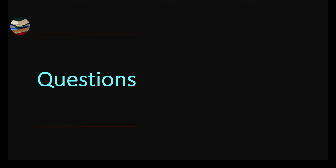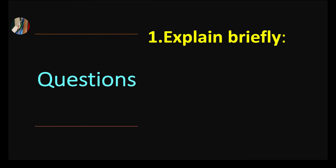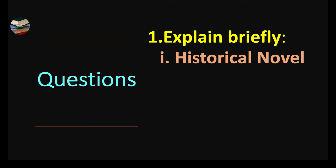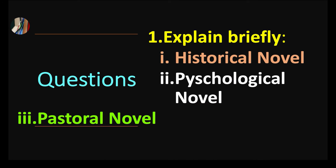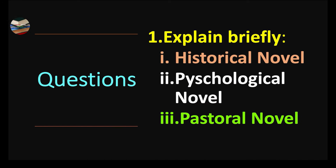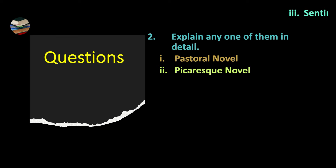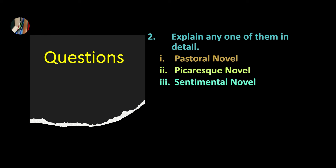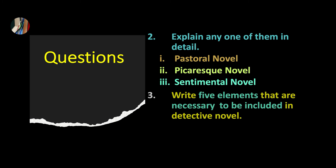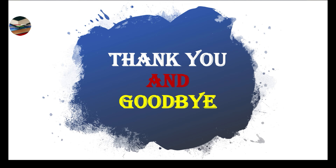Now we have review questions. First: explain briefly the historical novel, psychological novel, and pastoral novel. Second: explain any one of the following in detail — pastoral novel, picaresque novel, or sentimental novel. Third: write the five elements that are necessary to be included in a detective novel. Hope you understand the concept. Thank you and goodbye.